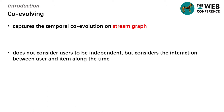The time series method, such as TimeALSTM, treats the temporal interaction graph as transaction sequences of each user and models the problem by a recurrent neural network. The co-evolving method, such as DeepCoevolve, captures the temporal co-evolution by two recurrent neural networks. The co-evolution does not consider the user to be independent, but considers the interaction between user and item along the time.